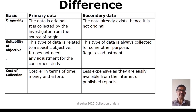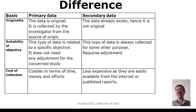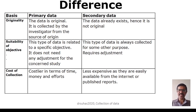Coming to suitability, primary data is relative to specific objectives because the researcher knows exactly what data he requires and from whom. It does not need any adjustment for the concerned study. Whereas secondary data is already collected for other purposes, so minor adjustments or alterations sometimes need to be made.